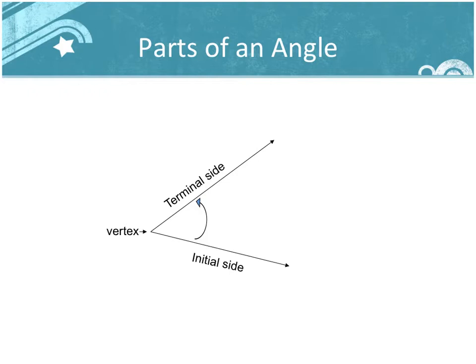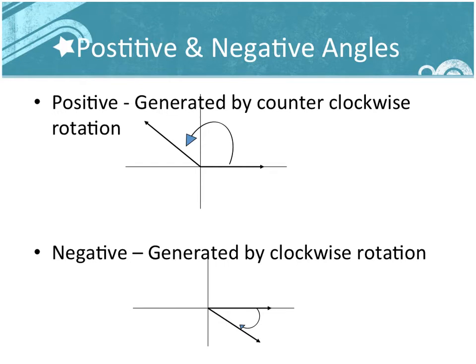We start with the basics — the parts of an angle. The initial side is the bottom side, or where the angle starts. The arrow tells you which direction the angle is going, and the terminal side is where it stops. The point where those two sides meet is called the vertex. A positive angle goes counterclockwise; a negative angle goes clockwise.